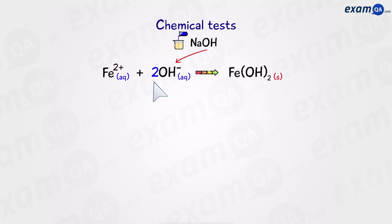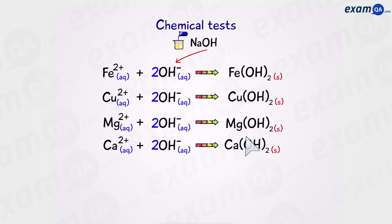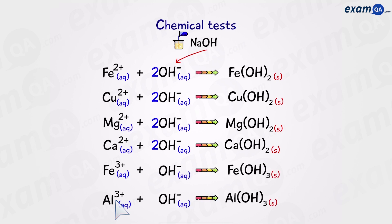Why don't you try to finish off this equation? The answer is: copper(II) (Cu²⁺) reacts with two hydroxides to make copper hydroxide, Cu(OH)₂. It's the same for magnesium, which is also a 2+ ion, and the same for calcium. However, with iron(III) (Fe³⁺) and aluminium(III) (Al³⁺) it's going to be a bit different — when they react with hydroxide ions there's going to be a three at the bottom of the OH in the formula. Don't forget to put a three in front of the hydroxide. Now that we know the equations, let's look at the colours we have to memorise.